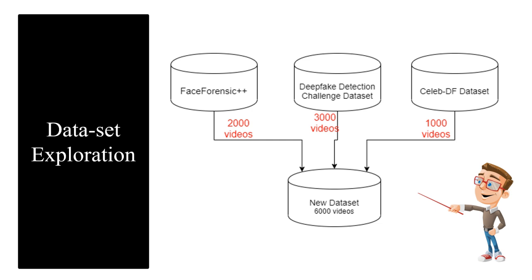The Deepfake Detection Challenge dataset contains some audio-altered videos. Since audio deepfakes are out of scope, we pre-processed that dataset and removed audio-altered videos using a Python script. After pre-processing, we took 1500 real and 1500 fake videos from the Deepfake Detection dataset, 1000 real and 1000 fake from FaceForensics++, and 500 real and 500 fake from the Celebrity Deepfake dataset — making our total dataset 3000 real and 3000 fake videos, totaling 6000 videos. This dataset is then passed to the pre-processing phase.